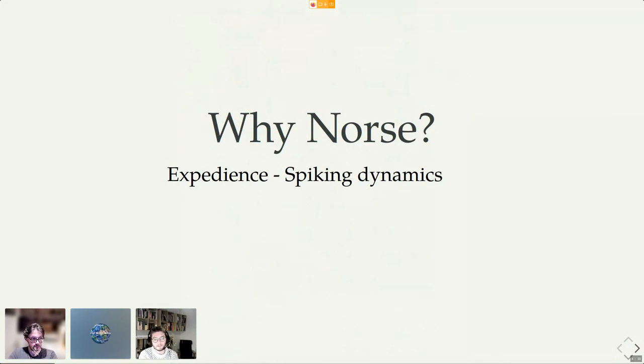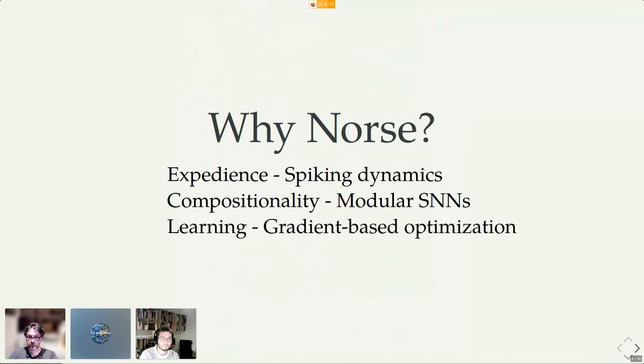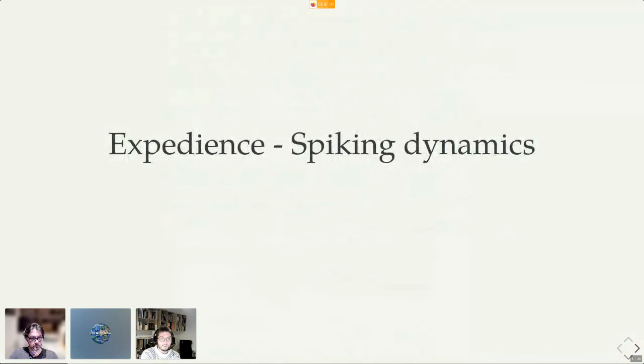And the why really pertains to the expedience I discussed before, so not just being able to run things fast but also to be able to describe it rather efficiently and to discuss and work with the abstractions rather efficiently. I'll talk about that specifically in terms of spiking dynamics. Compositionality is a big term for me. I'm a computer scientist by training, and of course I'd like to put things together. I'll explain how that gives us somewhat of modularity in terms of networks. Learning is of course a big topic, in this particular case gradient-based optimization. And finally I'll discuss some performance because it is of course also relevant.